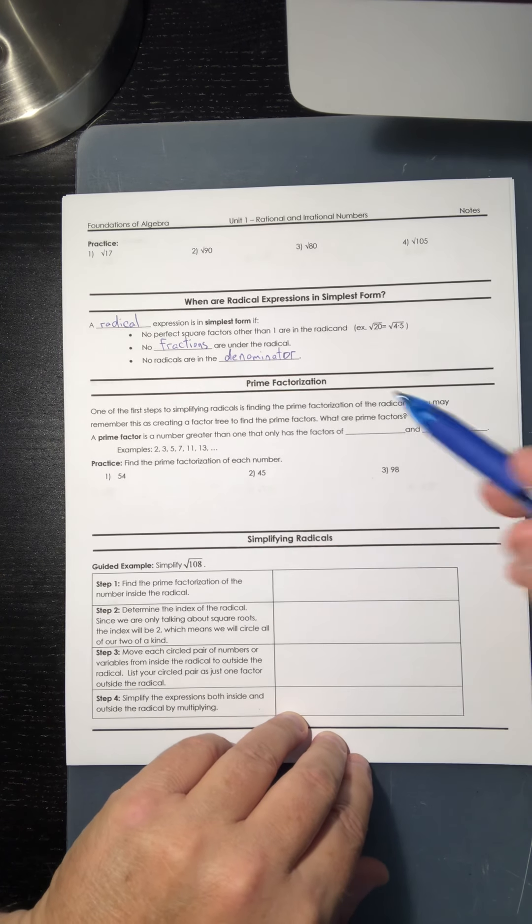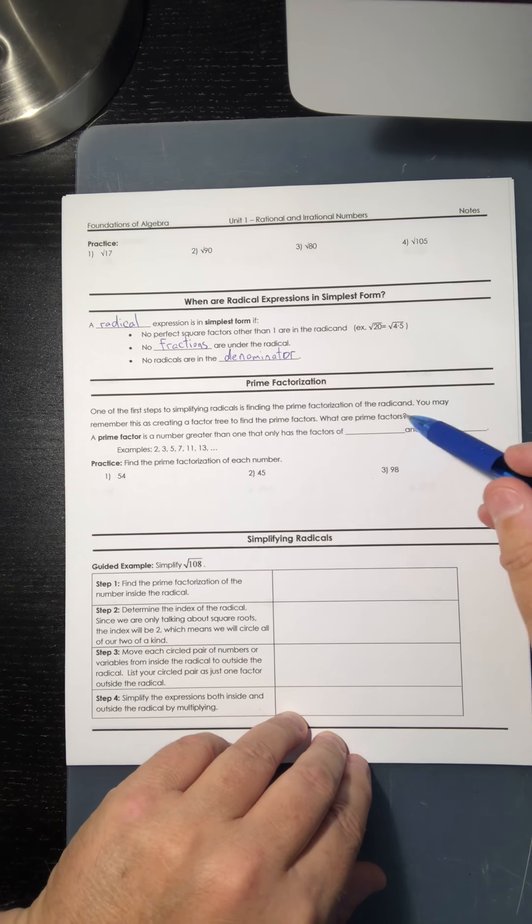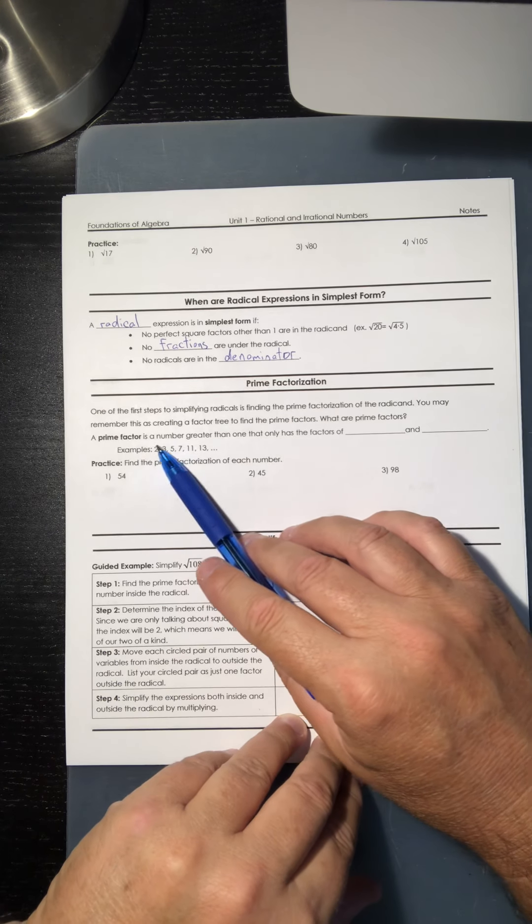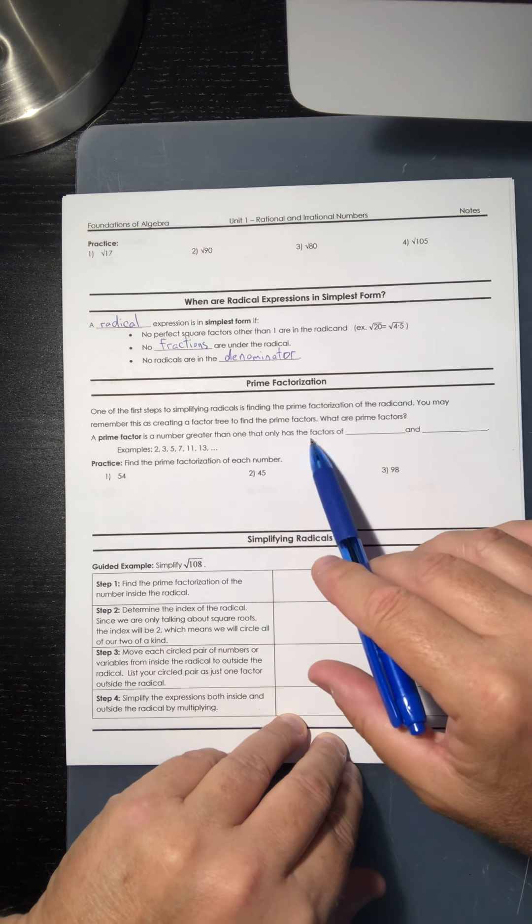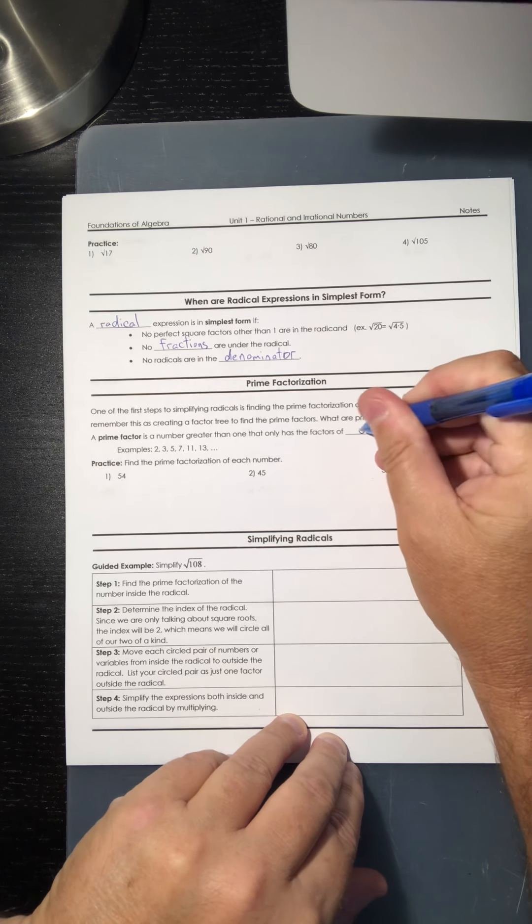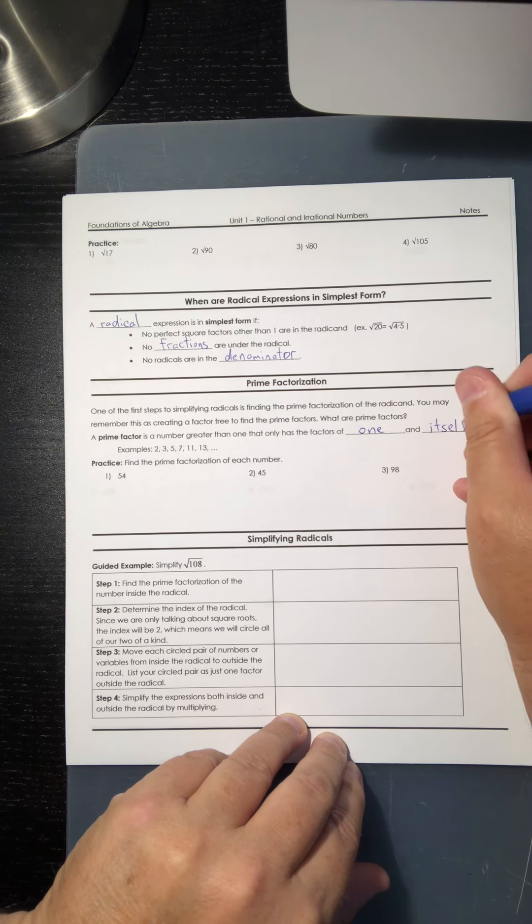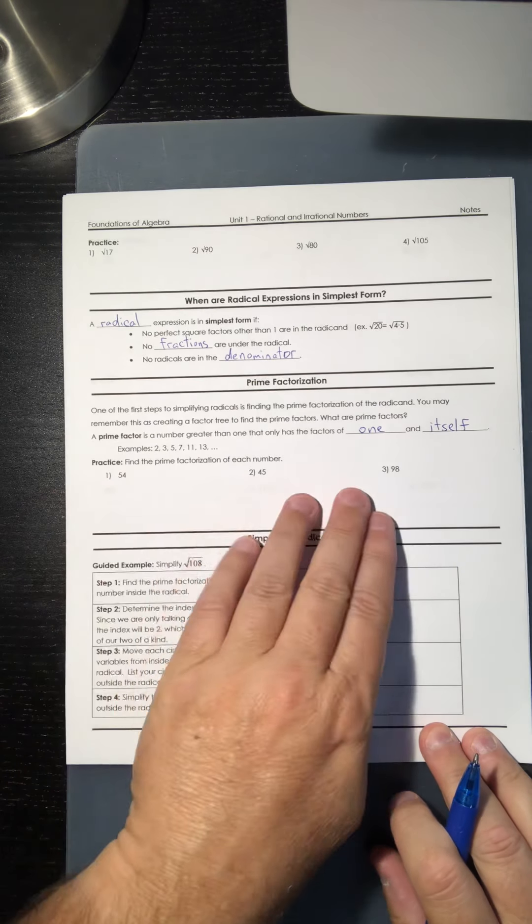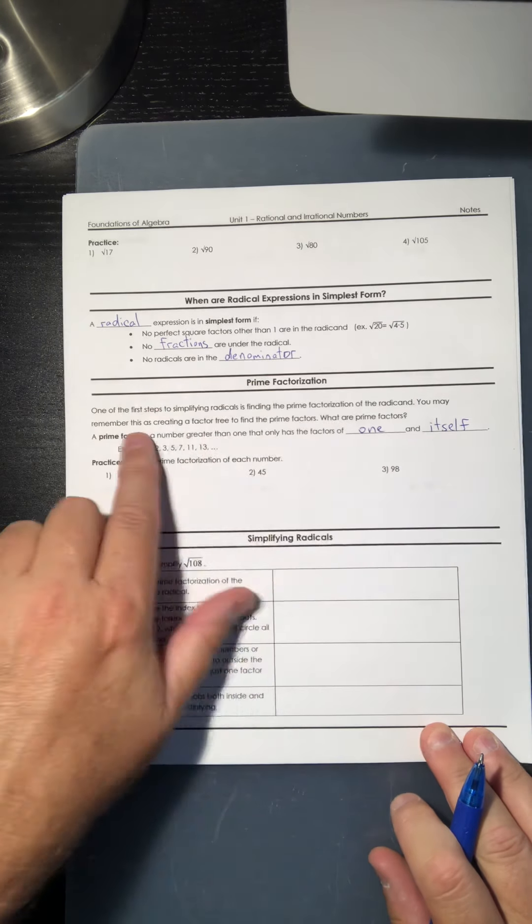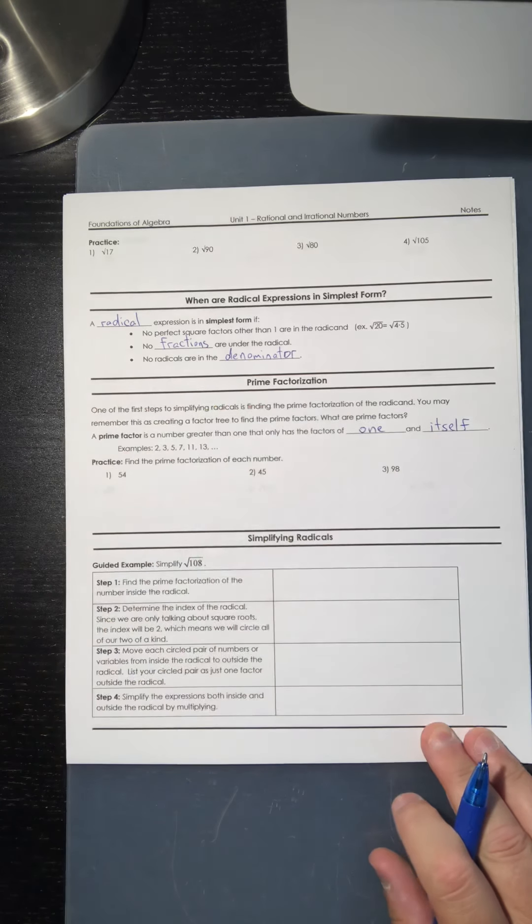What are prime factors? A prime factor is a number greater than one that only has the factors of one and itself. Now I know that's a lot of words, but again, we're about to do some practice and it's going to explain that further.